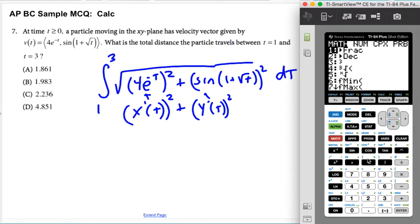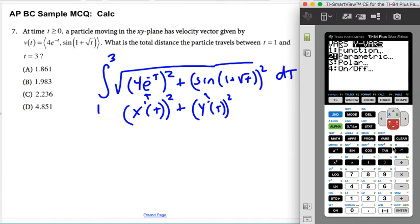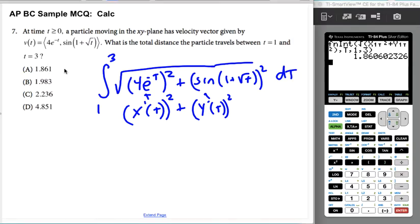And then I'm going to do math 9. The square root of vars over to yvars, pick parametric and pick x1 quantity squared, plus vars over to yvars, pick parametric and pick y1 quantity squared. Close the root, comma, with respect to t from 1 to 3. All right, and then double-check that all of those are correct, and then I get my answer—answer a.